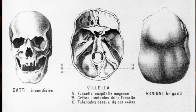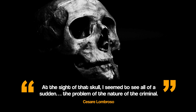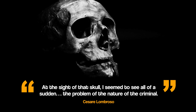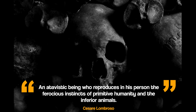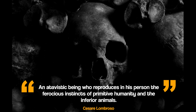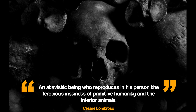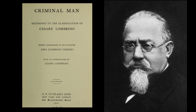What Lombroso spotted was a median occipital dimple in the man's skull — an indentation similar to ones found in lemurs and rodents. For Lombroso, this was evidence that criminal behavior was biological. 'At the sight of that skull I seemed to see all of a sudden the problem of the nature of the criminal — an atavistic being who reproduces in his person the ferocious instincts of primitive humanity and the inferior animals.' In his 1876 book Criminal Man, Lombroso suggested that criminals were a more primitive version of humans.